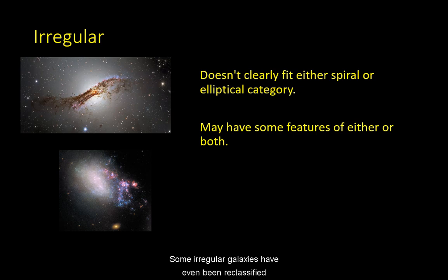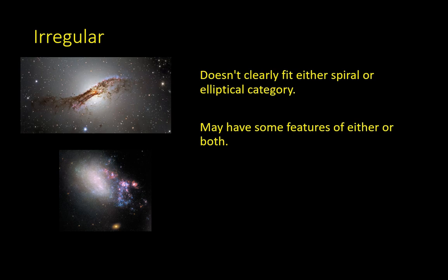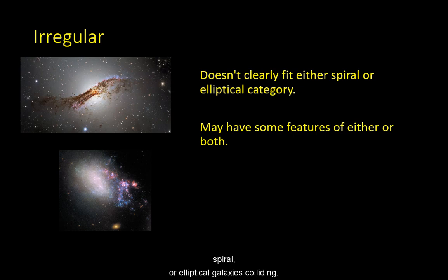Some irregular galaxies have even been reclassified as peculiar galaxies, in that their origin can be identified as perhaps spiral or elliptical galaxies colliding.